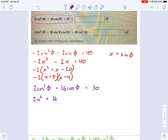2u squared plus 16u plus 30. Same as the last one. Factor out a GCF of 2. And I get u squared plus 8u plus 15. Well, what multiplies to 15 but adds to 8? It's going to be 5 and 3. So that's 2 times u plus 5 times u plus 3.